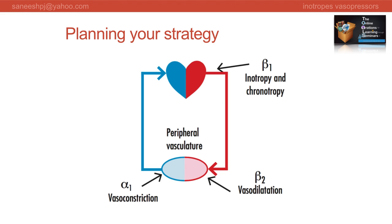Now let's start planning our strategy. We know where the adrenergic receptors are located. Beta-1 receptors lead to inotropy - that is cardiac contractility - and chronotropy, meaning heart rate changes. Beta-2 leads to vasodilatation, and alpha-1 receptors cause vasoconstriction. Remember we also have dopamine receptors and vasopressin V1 receptors. Some of the newer drugs directly influence intracellular cyclic AMP levels to produce their effects.